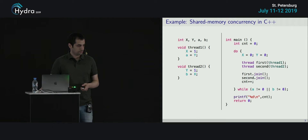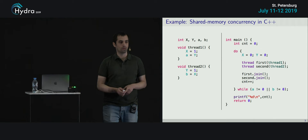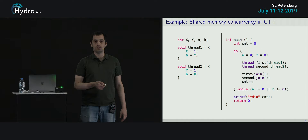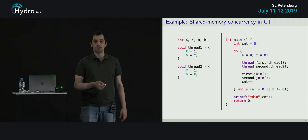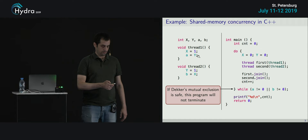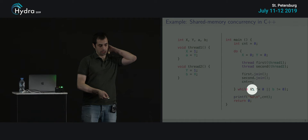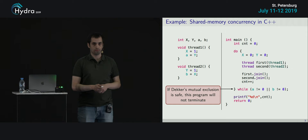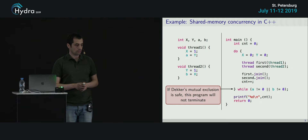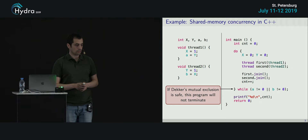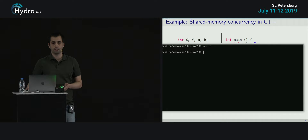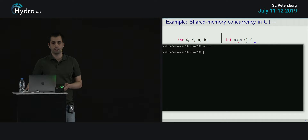I would like to show a very small C++ program, actually one of the few C++ programs that I wrote, to demonstrate this. We have our two threads running in a loop; we join them, increment some counter, and only terminate if A is not zero or B is not zero. Namely, if Decker's algorithm is safe and mutual exclusion is guaranteed, then this program should never terminate. It terminated after 182 iterations — it's just a simple app.